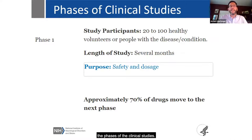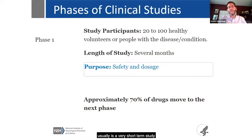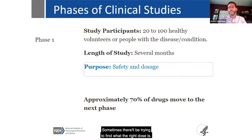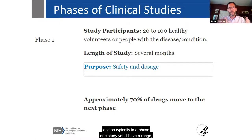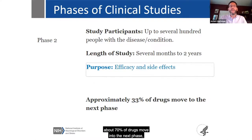You'll hear us refer to the phases of clinical studies, which are really based on drug studies, though people sometimes reference them for device and behavior interventions too. A Phase 1 study typically involves a limited number of healthy volunteers or people with a disease or condition. It's usually a very short-term study focused on defining safety — making sure the intervention doesn't have some major adverse effect — and dosage. About 70% of drugs move into the next phase, Phase 2.